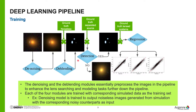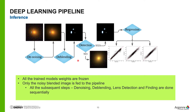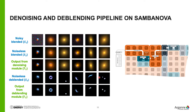Once each module is trained, we take the trained modules and do inference end-to-end: given a noisy image, we first determine whether it is a lensed image, and if so, we do the regression. SambaNova provides ways to optimize this modular pipeline — in addition to mapping convolution layers via the dataflow engine, we map each module into the PMUs and PCUs. Consequently, data flows from the denoising module into de-blending, then into lens detection, and finally into the regression module, without going back and forth to main memory.